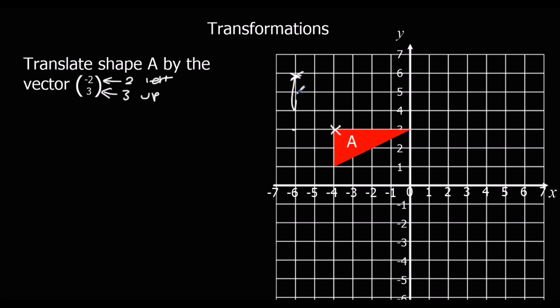And then we can just draw 2 along, 4 across, draw the new triangle. And we'll call it B.